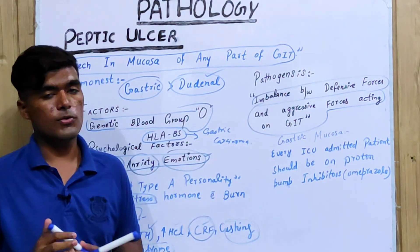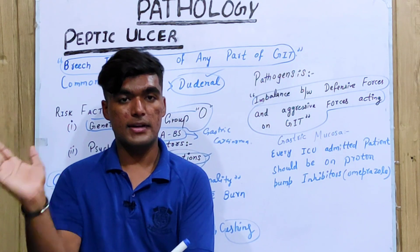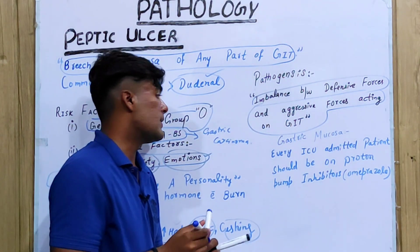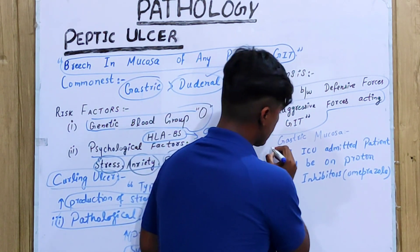Pathogenesis is basically a one-line concept: it is an imbalance between defensive forces and aggressive forces acting on the GIT. In the second part of the lecture, we will discuss those defensive and aggressive forces in detail.